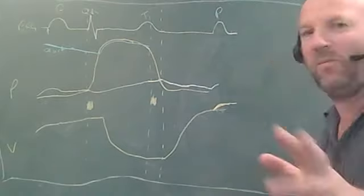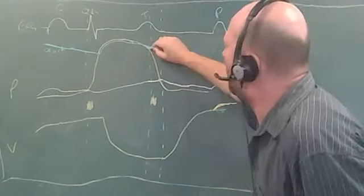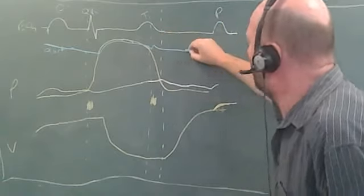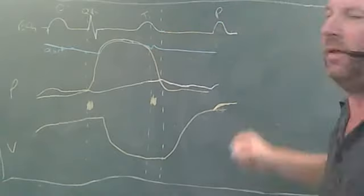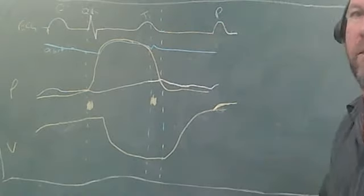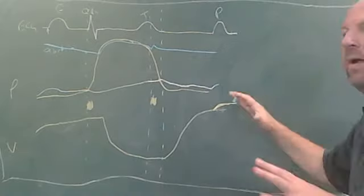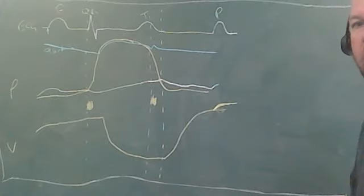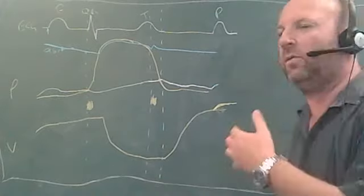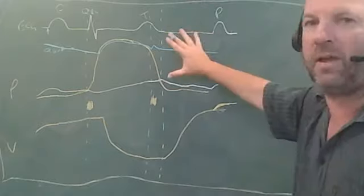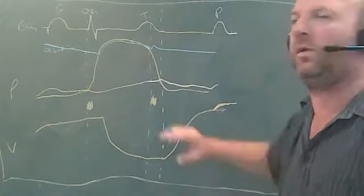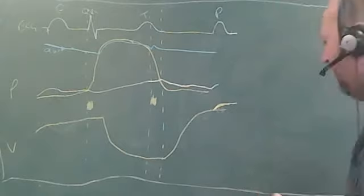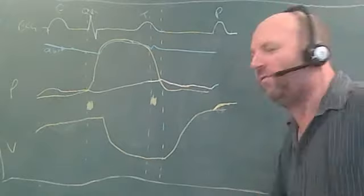One thing I forgot to mention: with the aorta, when the valve shuts you get the slight dicrotic notch, and then aortic pressure is maintained high throughout. That's a general rundown of the cardiac cycle. In the next video, we'll look at certain areas and discuss what's going on at a greater physiological level.